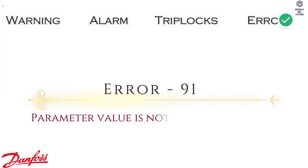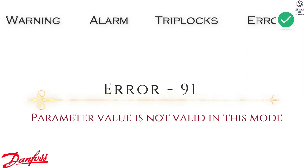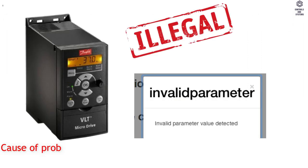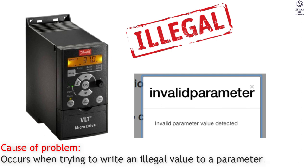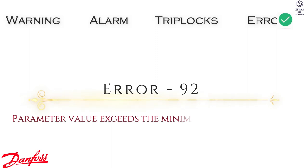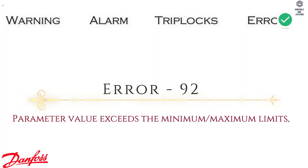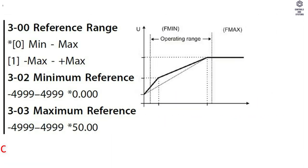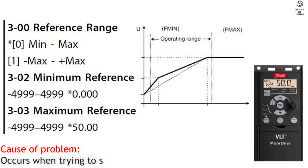Error 91: Parameter Value is Not Valid in this Mode. Cause of Problem — occurs when trying to write an illegal value to a parameter. Error 92: Parameter Value exceeds the Minimum/Maximum limits. Cause of Problem — occurs when trying to set a value outside the range.